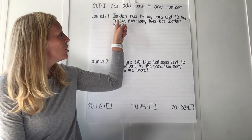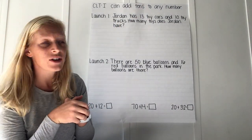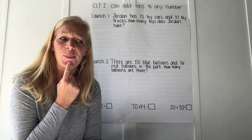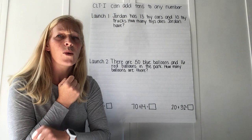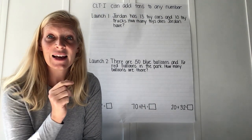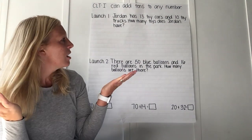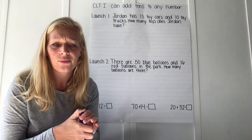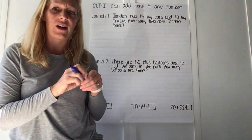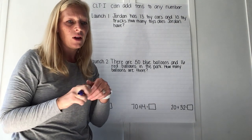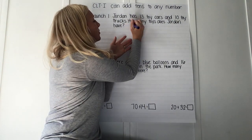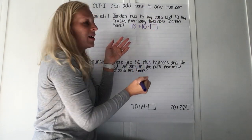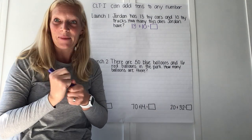Our first problem goes like this: Jordan has 13 toy cars and 10 toy trucks. How many toys does Jordan have? What do we already know? He has 13 toy cars. What else do we already know? He has 10 toy trucks. How many toys does Jordan have? Can I have you all write an equation that would match this story? Put a thumb in front of your tummy when you have that equation written. What would we write? 13 plus 10 equals blank. I see a lot of agreement.